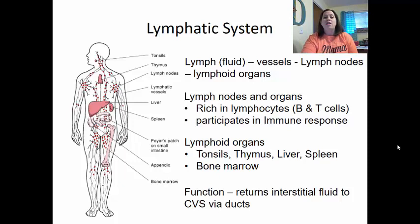The function of the lymphatic system is to return interstitial fluid — the fluid around your cells — back to the cardiovascular system through a series of ducts. This helps keep plasma levels in the blood stable and ensures your tissues don't get too swollen, which we call edema.